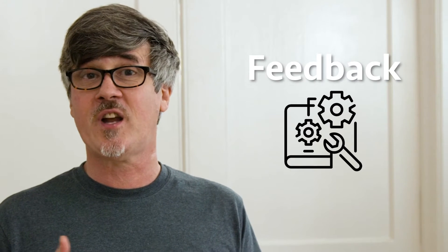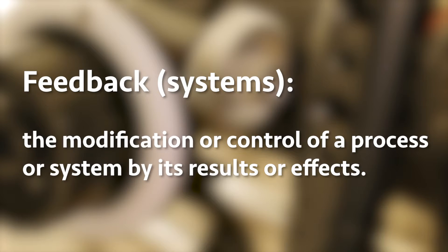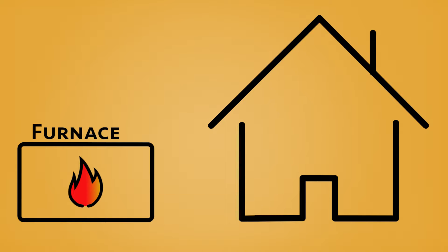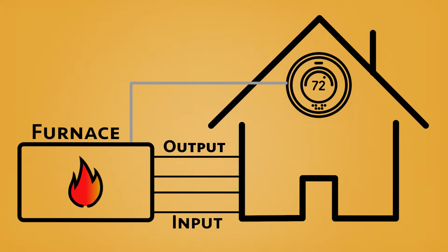First, let's look at the definition of feedback in the engineering mechanical world: the modification or control of a process or system by its results or effects. An example would be the heater where you live. Colder air goes in and comes out hotter, and a thermostat reads that temperature and tells the heater whether to turn off and when to turn on again — it gives it feedback. That's called a feedback loop. And when the heater gets that information, it doesn't get bent out of shape about it — "You want me to turn on again? I was just on five minutes ago!"